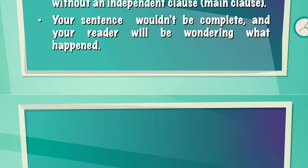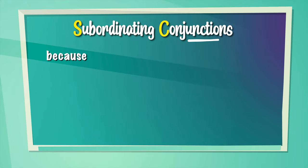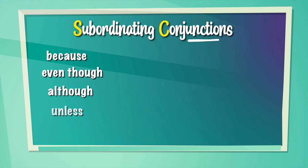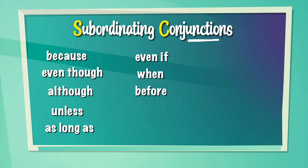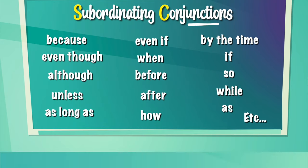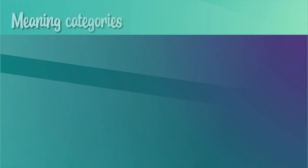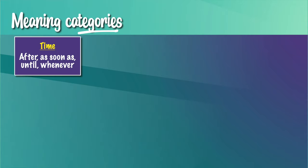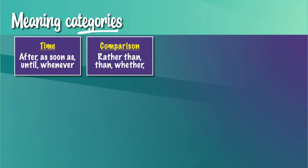So let's list some subordinating conjunctions and organize them by categories. The first category is Time: after, as soon as, until, whenever. The next category is Comparison: rather than, than.